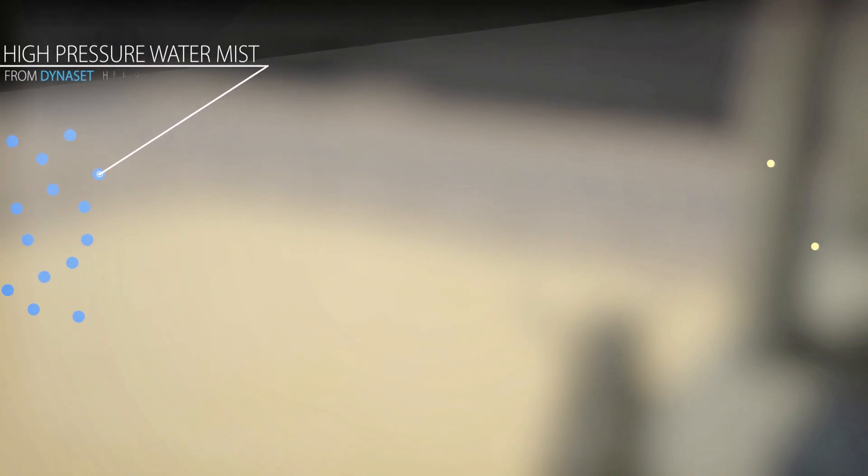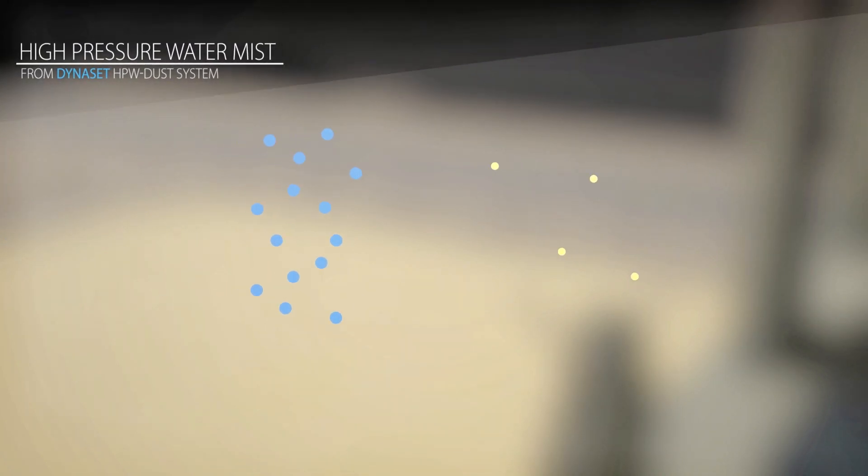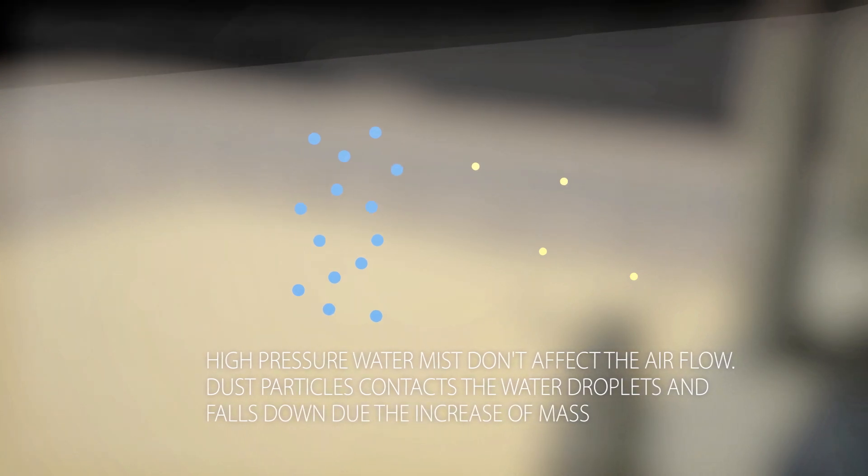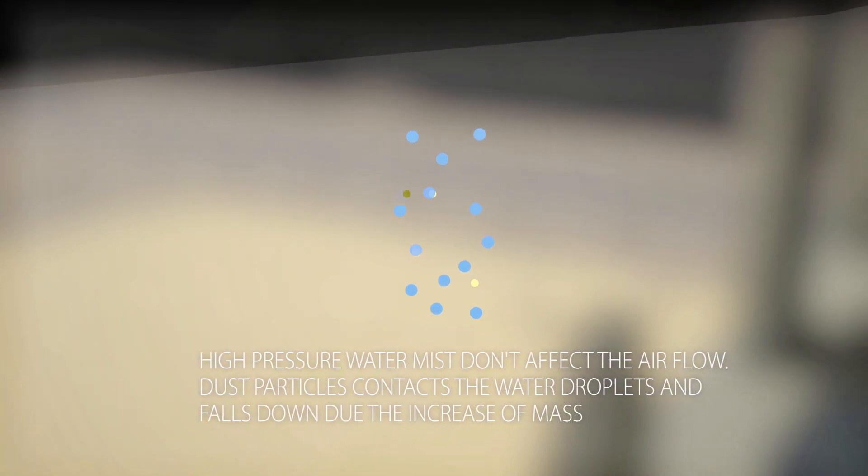With the high-pressure dust suppression system, the small water droplets of the high-pressure water mist won't affect the airflow. The dust particles make contact with the small water droplets and fall down due to the increase of their mass.